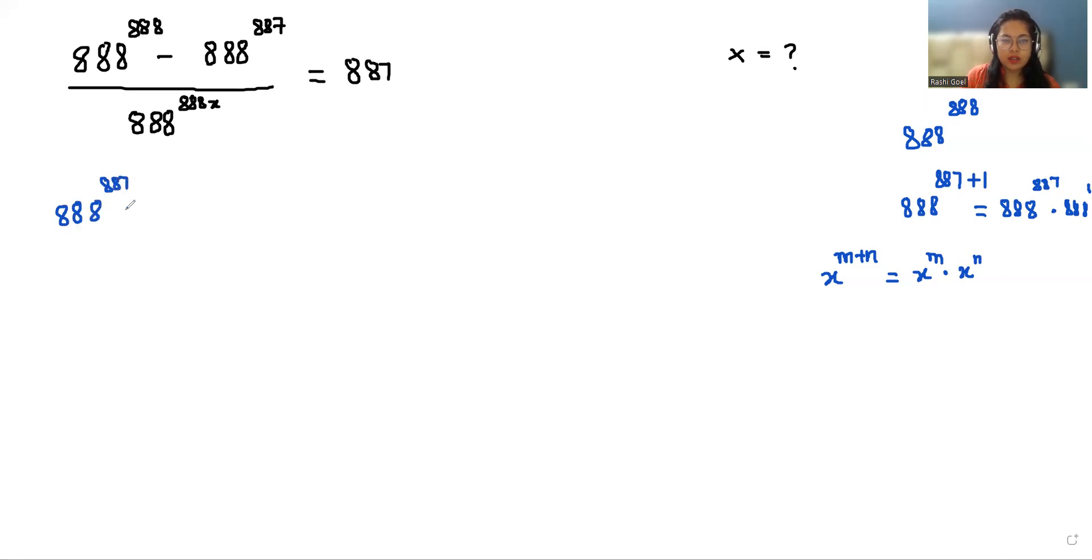888 power 887 times 888 minus 888 power 887 divided by 888 power 888 x equals 887. Now from the numerator I can take 888 power 887 common.